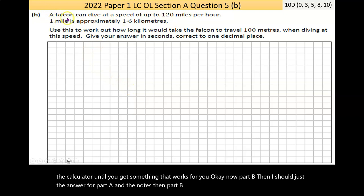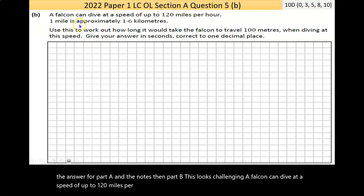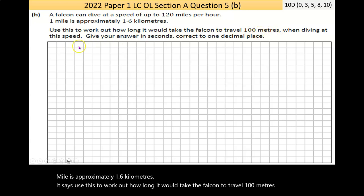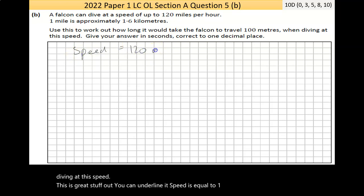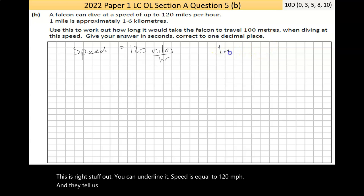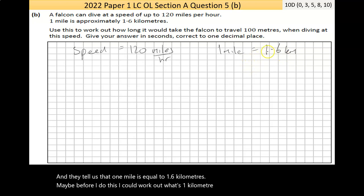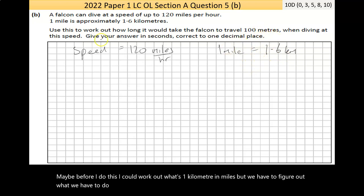Then part B, this looks challenging. A falcon can dive at a speed of up to 120 miles per hour. One mile is approximately 1.6 kilometers. It says, use this to work out how long it would take the falcon to travel 100 meters when diving at this speed.